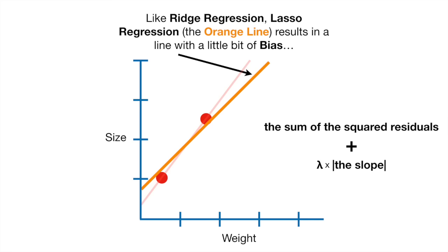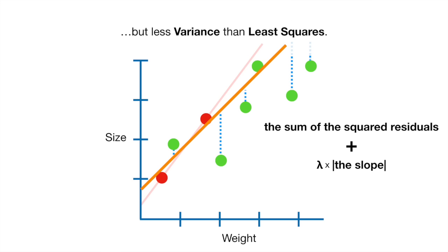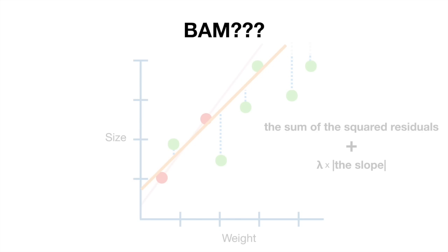Like Ridge Regression, Lasso Regression, the orange line, results in a line with a little bit of bias, but less variance than least squares. Bam!